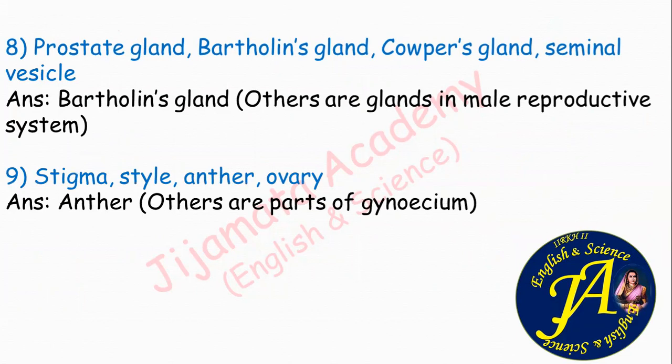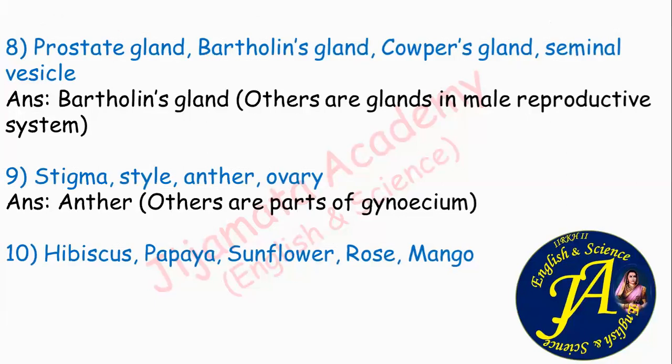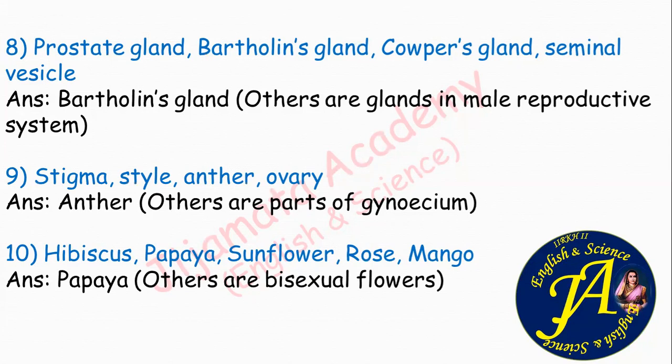Hibiscus, papaya, sunflower, rose, mango. The correct answer is papaya, because all others are bisexual flowers — they have both androecium and gynoecium on the same flower — while papaya is a unisexual flower, having separate male and female flowers.